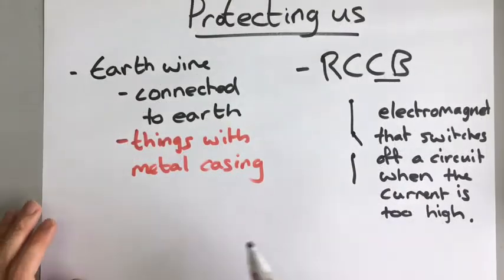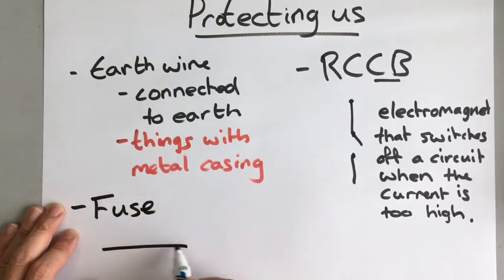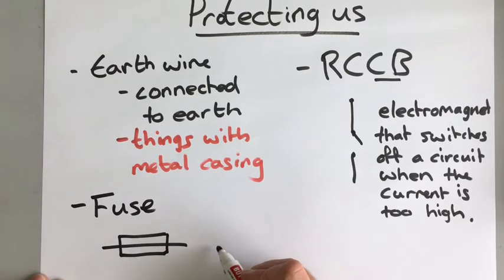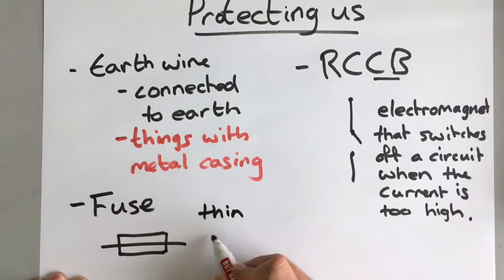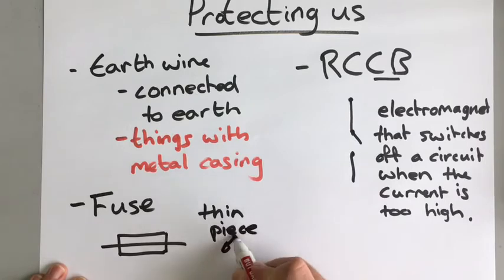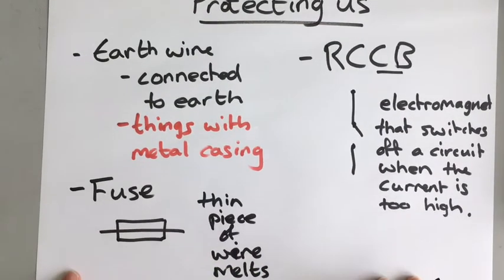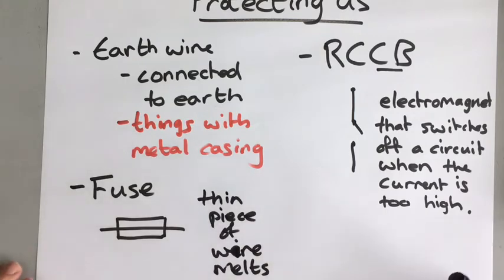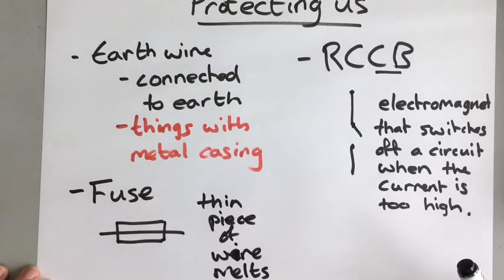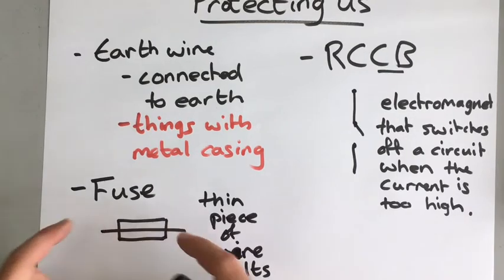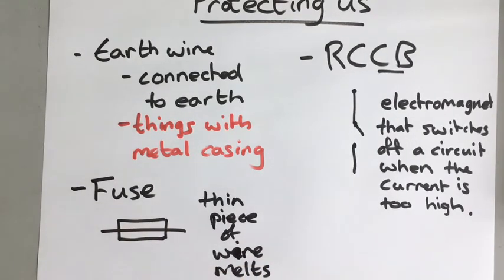Now the final thing that we use to protect us is called a fuse. Now we talked about fuses when we talked about circuit symbols very briefly but this is what a fuse looks like in a circuit and a fuse is basically a thin piece of wire that completes the circuit. Now if the current in the circuit gets too high then the thin piece of wire melts. Now if the thin piece of wire melts it breaks the circuit and the circuit can no longer conduct electricity. So if the current gets too high the piece of wire melts it breaks the circuit and no current flows and so it keeps us safe.